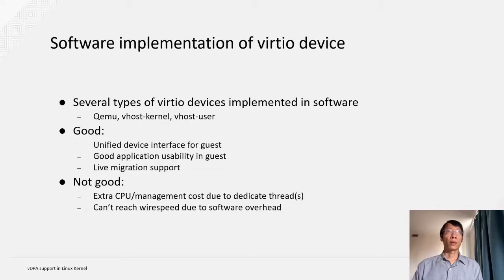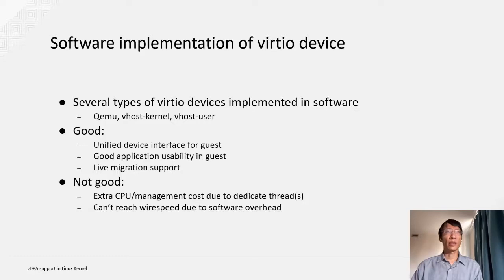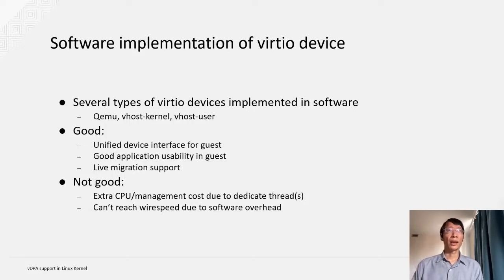With the virtio specifications and software implementations of virtio devices, we get good application usability. We get a unified device interface, and we even get live migration support. But there are still several drawbacks. The first is that the software implementations require extra CPU cycles. And it requires extra management costs for settings such as CPU or memory affinity. And the last and probably most important one is that it can't reach wire speed due to the software overhead, considering the commodity high-speed Ethernet network cards becoming available.